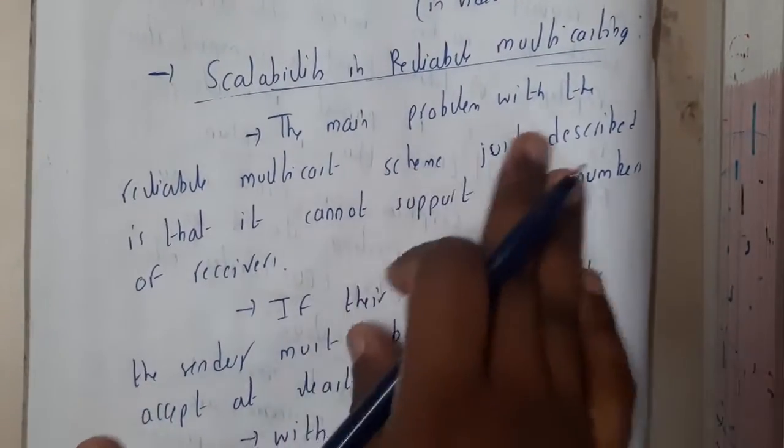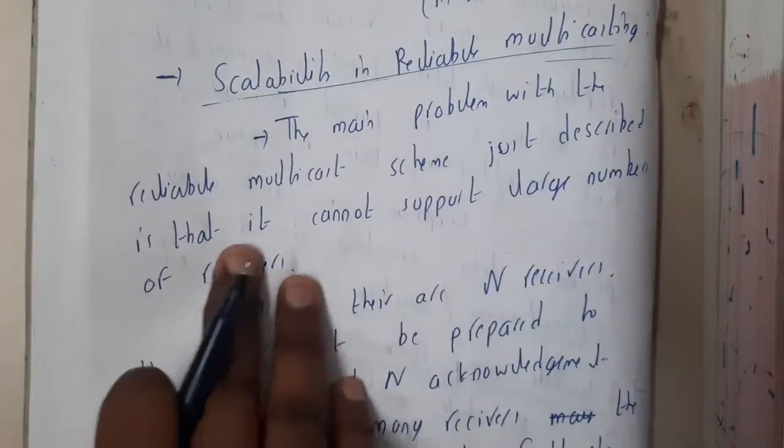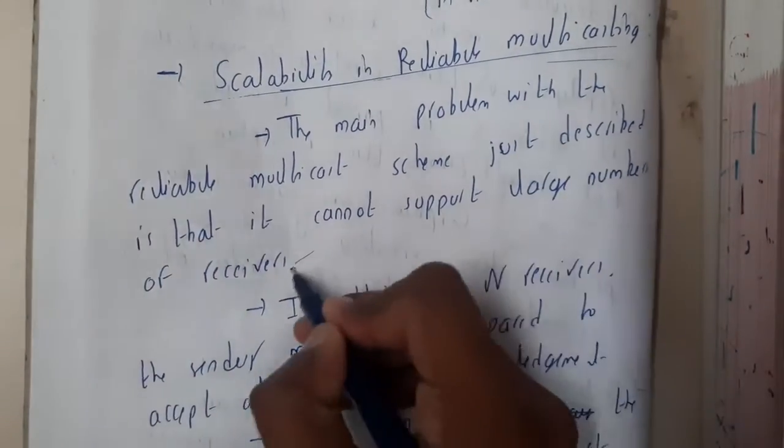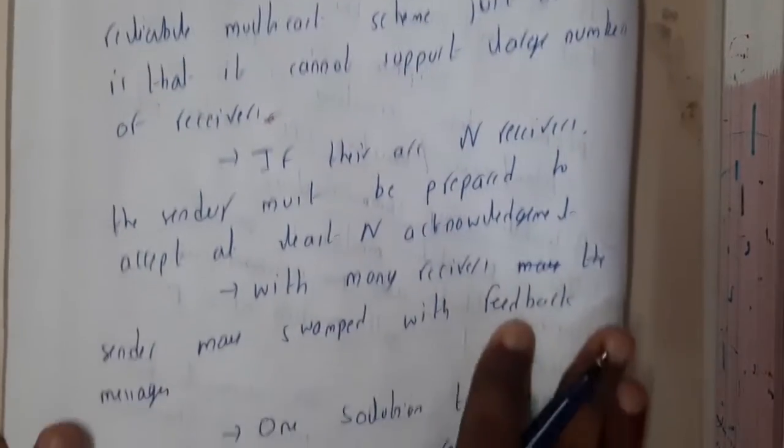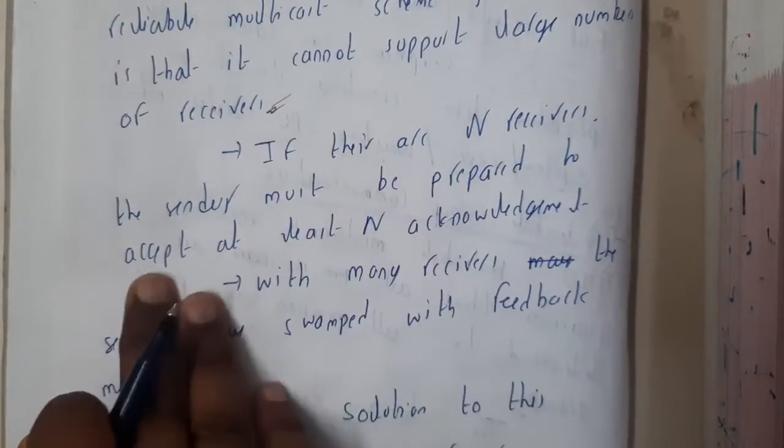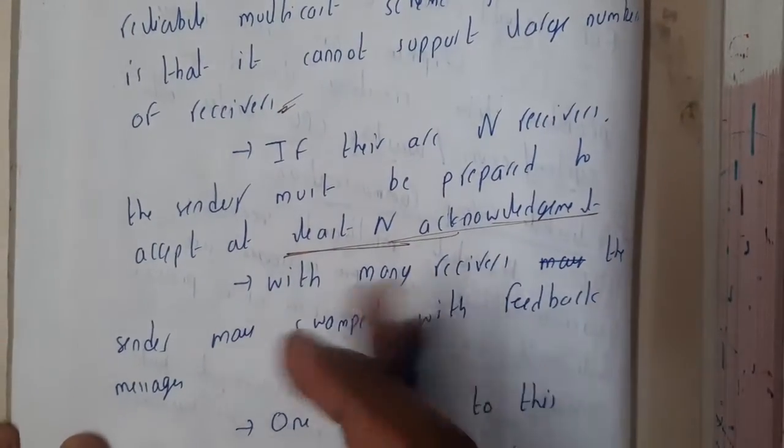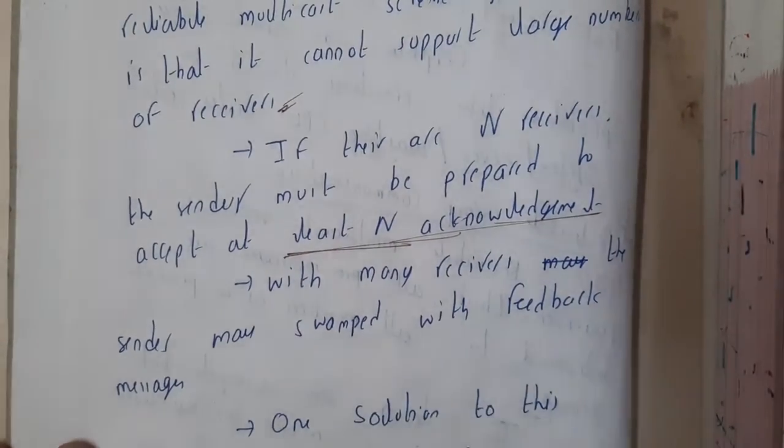The main problem with this reliability multicasting scheme just described is that it cannot support a large number of receivers. If there are n receivers, the sender must be prepared to accept at least n acknowledgements. You should accept everyone - yes I got, yes I got, yes I got - so that's a huge issue.